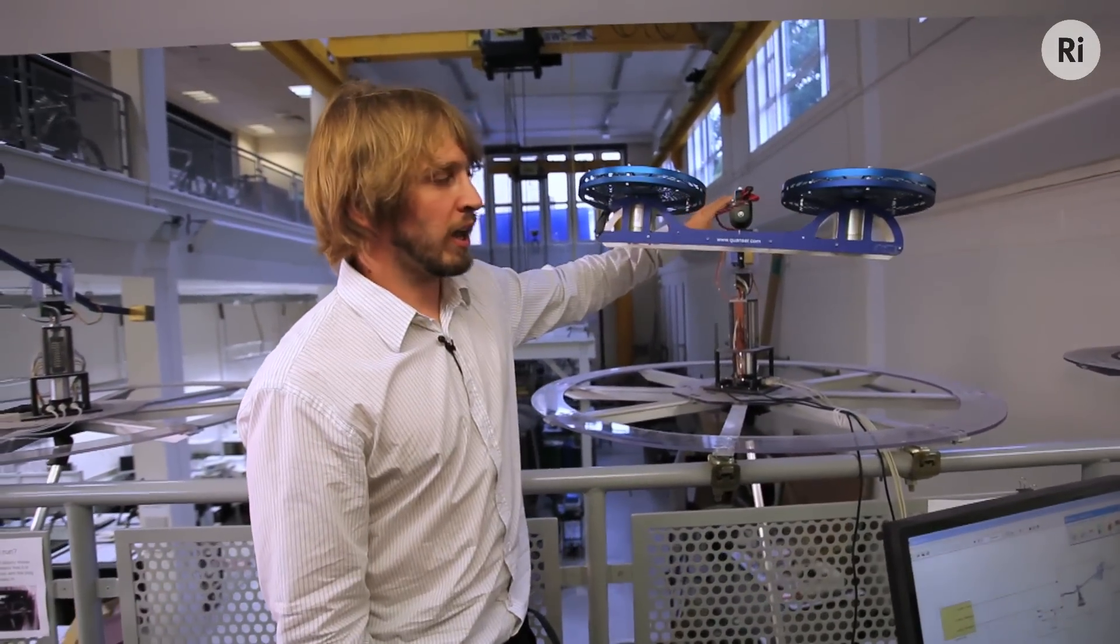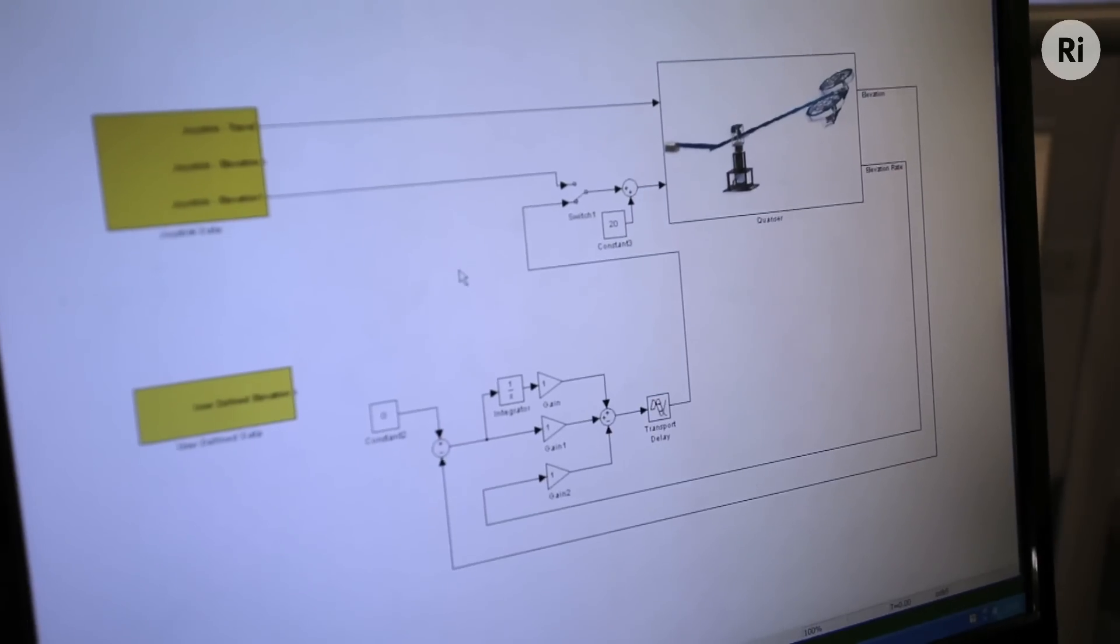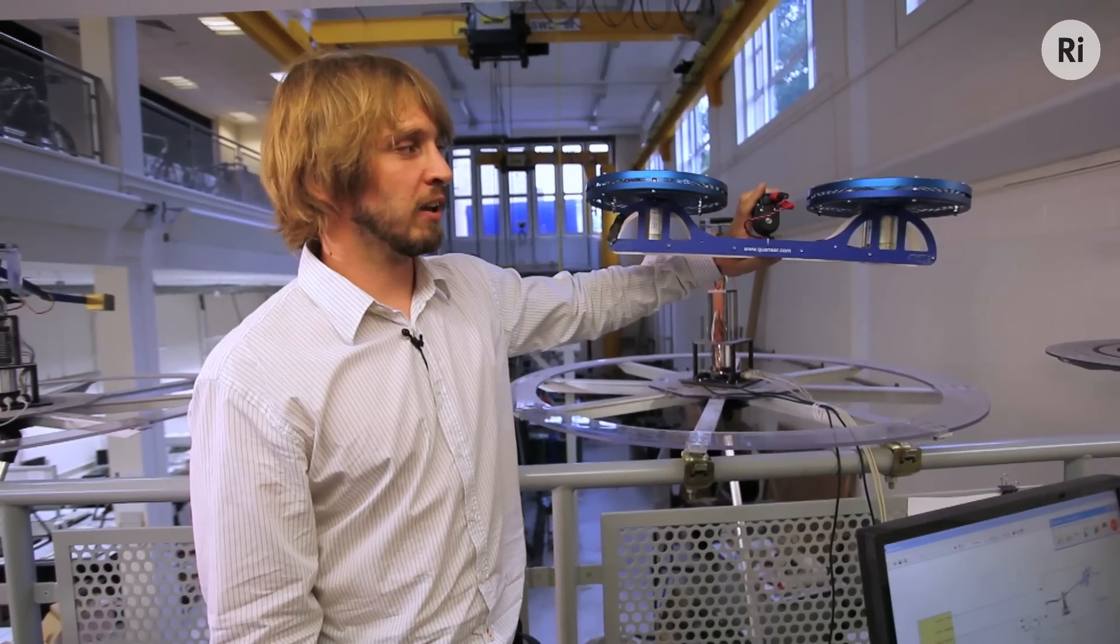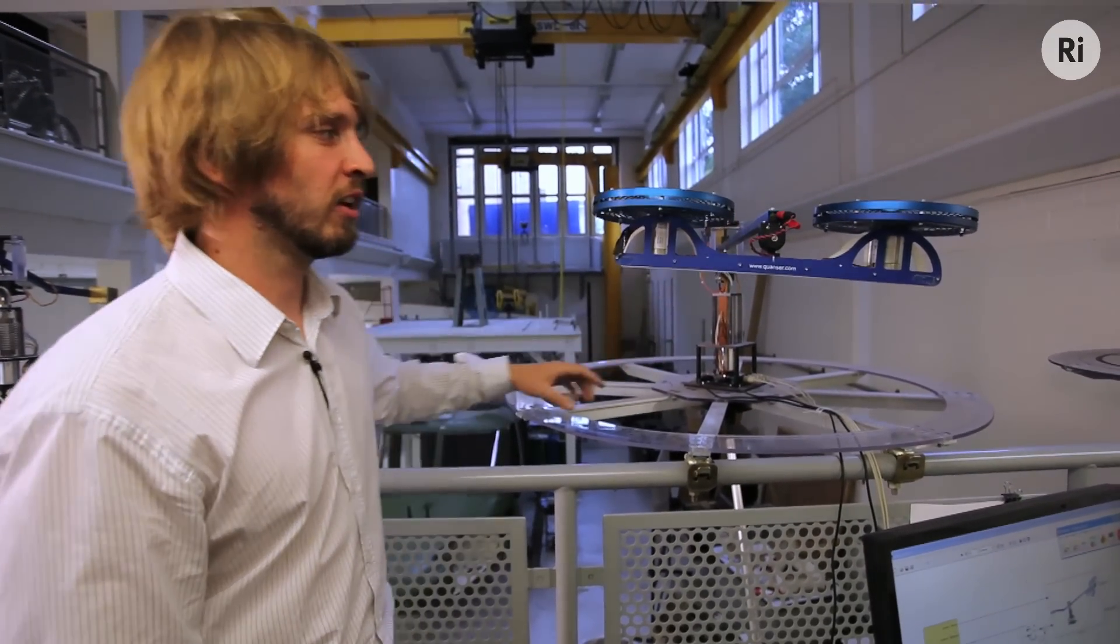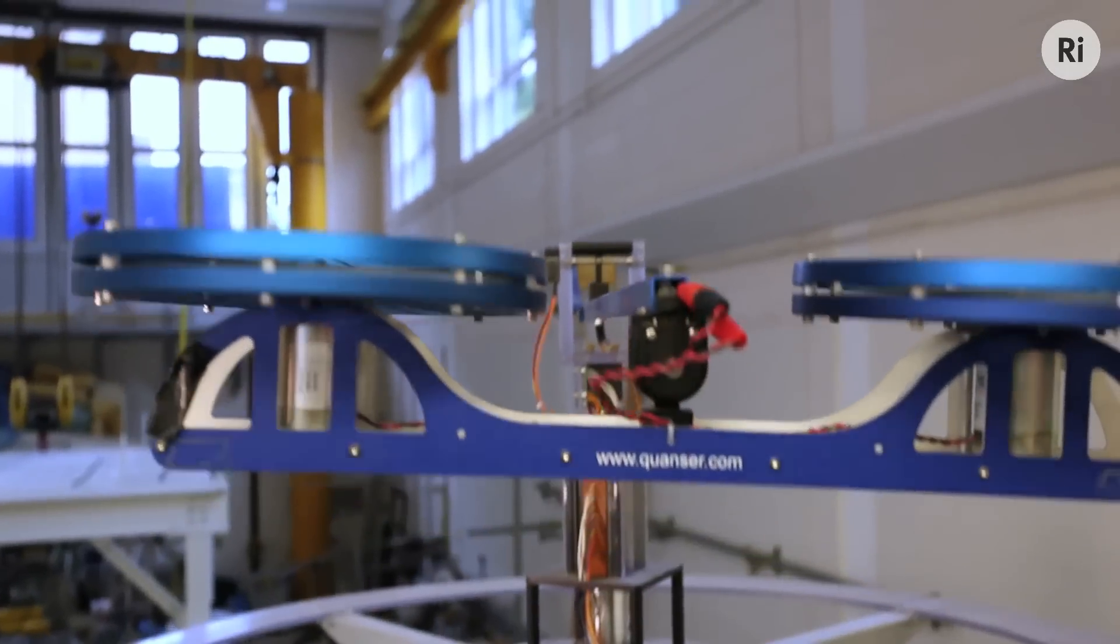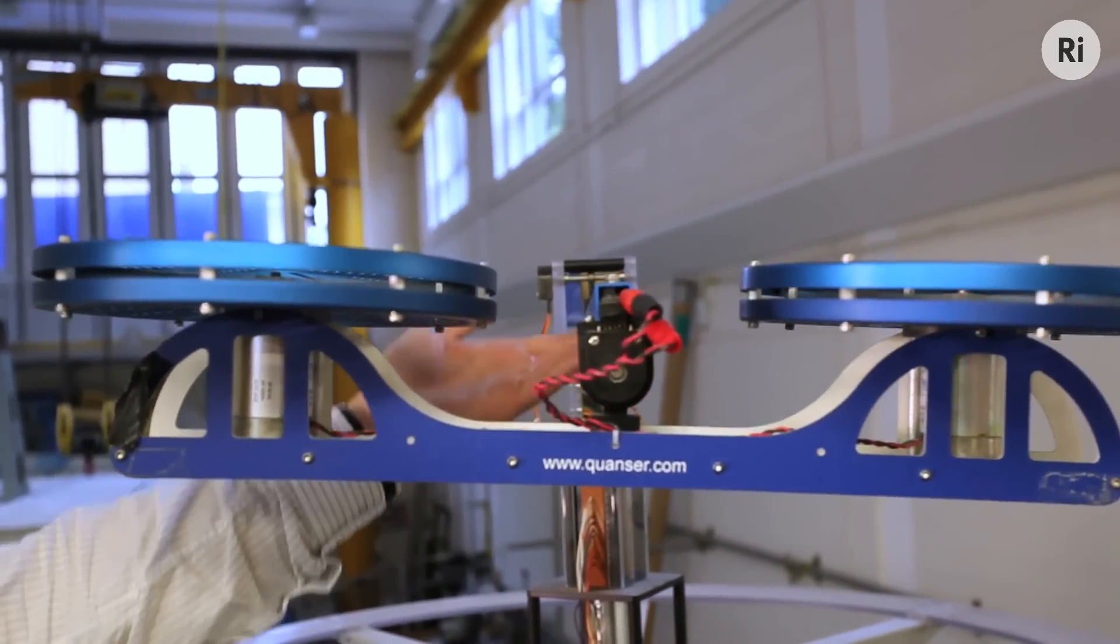Now, we're going to go ahead and change that. We're now going to close the loop on that control system. And using the feedback, we get a much more stable position. Now if I nudge it, the fans change speed to compensate. So that controller allows it to stay in the same position.